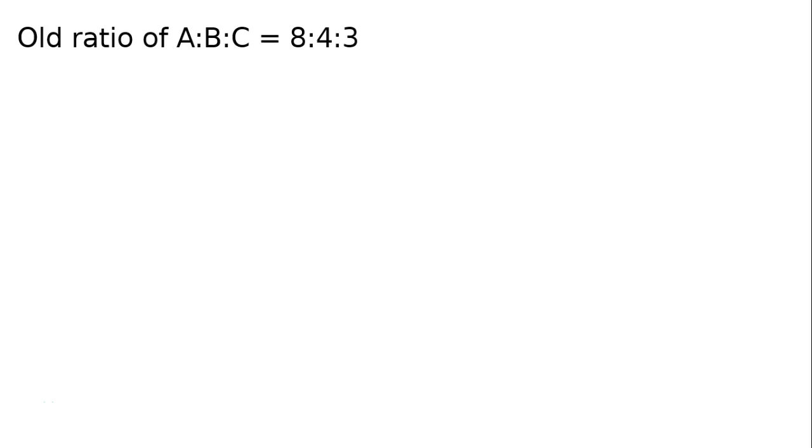The question is: A, B and C were partners in a firm, sharing profits in the ratio of 8:4:3. B retires and his share is taken up equally by A and C. Find out the new profit sharing ratio.